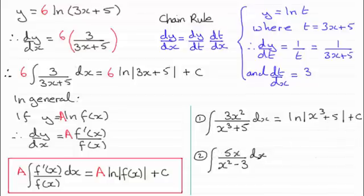But when it comes to number 2, again, we've got a fraction here. Looking at the denominator, x² minus 3, if I differentiate that, I get 2x. But at the top here in the numerator, I've got 5x.